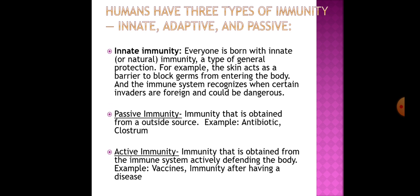Passive immunity is immunity obtained from an outside source — for example, antibiotics and colostrum. Active immunity is immunity obtained from the immune system actively defending the body — for example, vaccines or immunity acquired after having a disease.